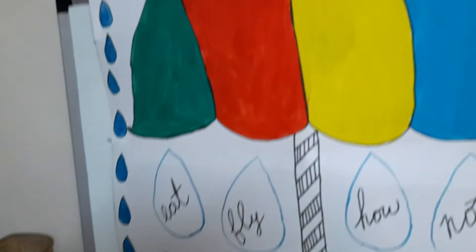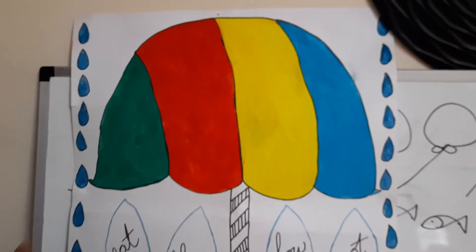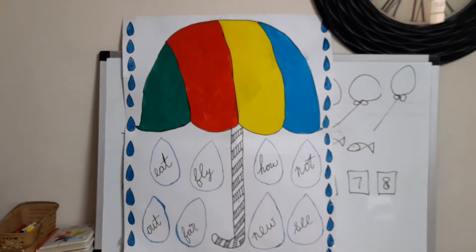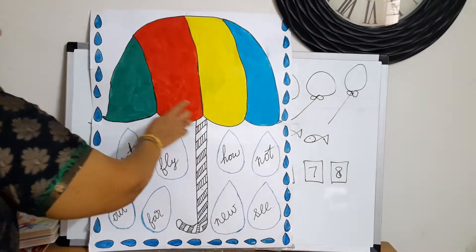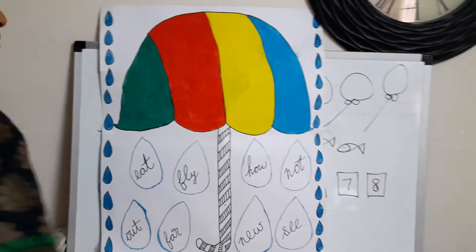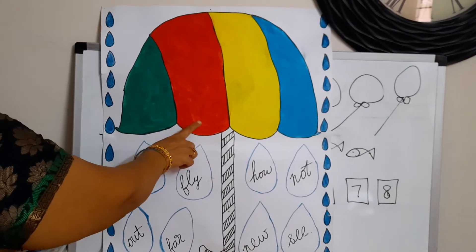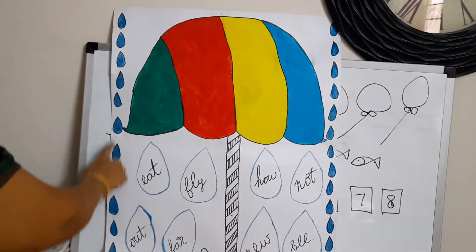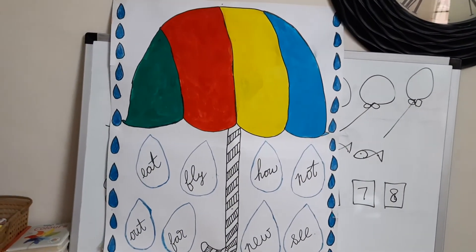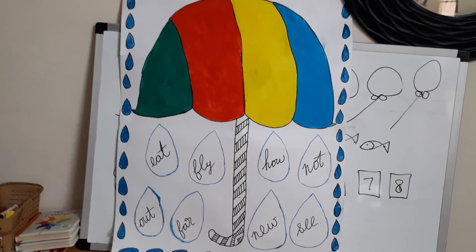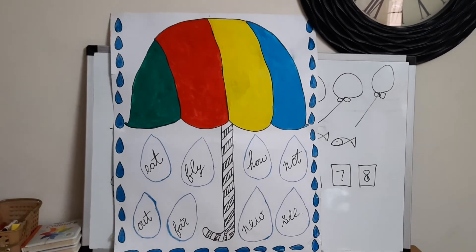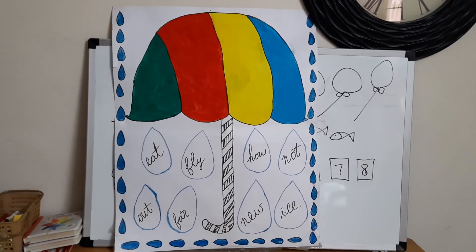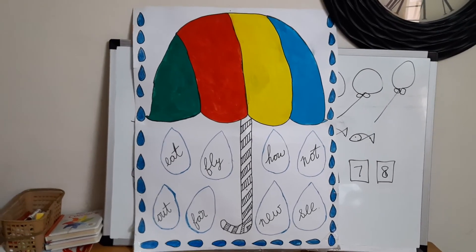These are the four colors which we have learned. Now this is the activity you have to do — you have to draw. Parents, please help your child to draw the umbrella. Draw the umbrella with the stick and four cuts. Green, red, yellow, blue — these are the raindrops. Draw the umbrella and the colors like this in your book.